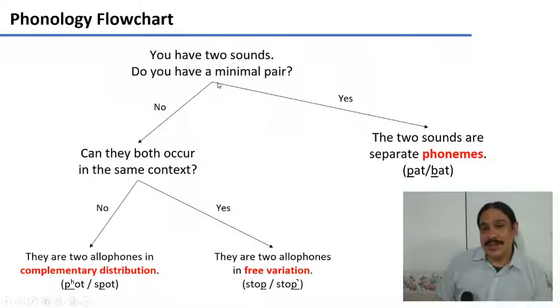So let's look at a flowchart of what we have so far. Let's say you have two sounds like P and aspirated P or S and SH. Do you have a minimal pair for them? If the answer is yes, then those two sounds are phonemes. For example, P and B are phonemes in English because we have the minimal pairs pat and bat.